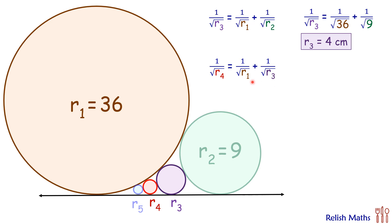So putting the values r1 is 36, r3 is 4. Solving it we will get 1/√r4 = 1/6 + 1/2 = 2/3. Now taking reciprocal and squaring both sides to get r4 as 9/4 cm. So we have got this radius of r4 as 9/4 cm.